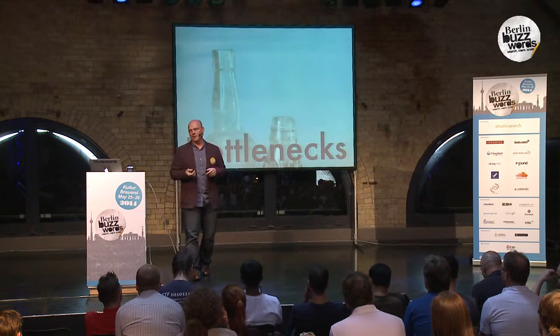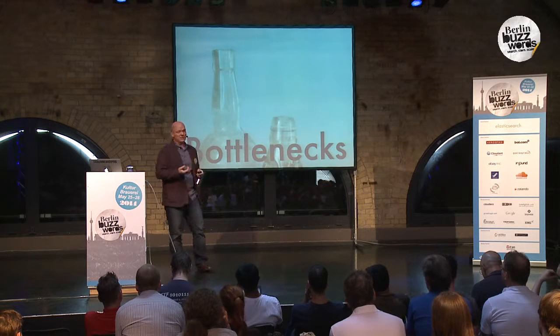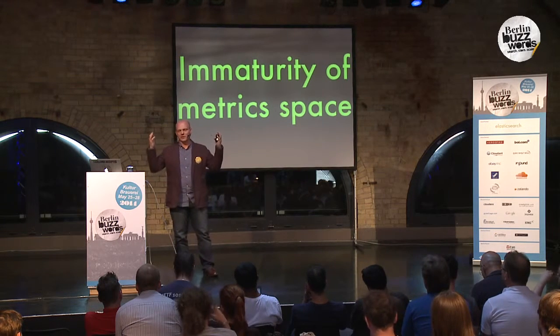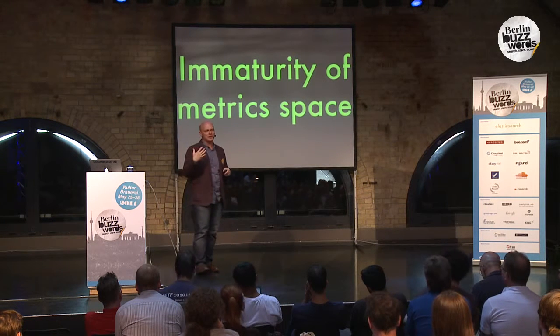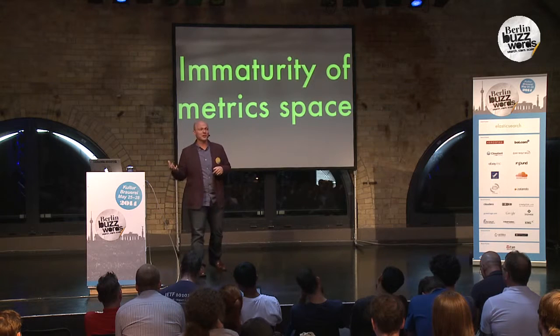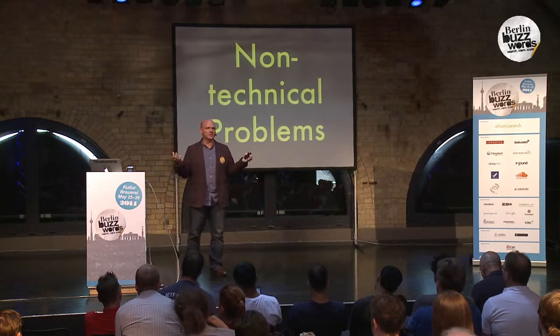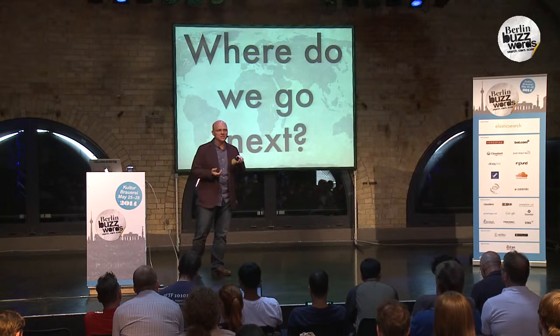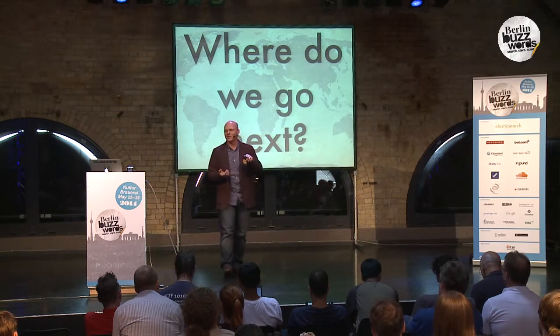What I see happening is that open source systems are starting to be bottlenecked by their databases. Each of the time series open source systems uses a database to actually store the time series data and there's overhead there. We've reached the point with cloud metrics that Cassandra is our biggest bottleneck. But this almost a benefit — the fact that the scene is so immature means we're going to be able to improve it quickly. Many of the problems in the metrics scene are not technical — they're problems that can be solved with a better community and people working together.